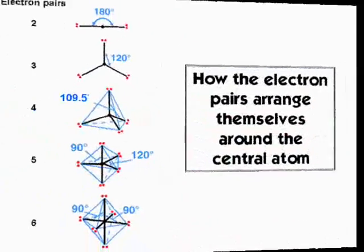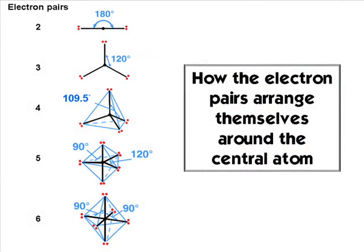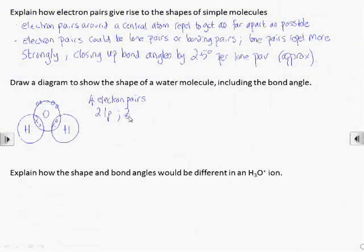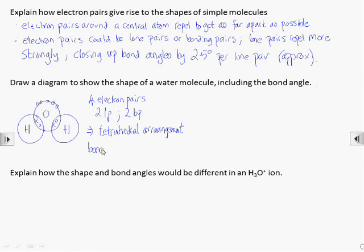You will need to learn how electron pairs from 2 pairs to 6 pairs arrange themselves around the central atom, and the angles between the electron pairs. Anything with 4 electron pairs will take up a tetrahedral arrangement around the central atom, with the electron pairs 109.5 degrees apart. Since water has 2 lone pairs and 2 bonding pairs, the lone pairs force the bonding pairs closer together by 2.5 degrees per lone pair, making the bond angle equal to 104.5 degrees.